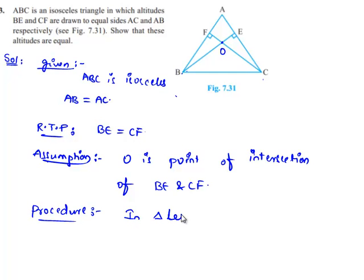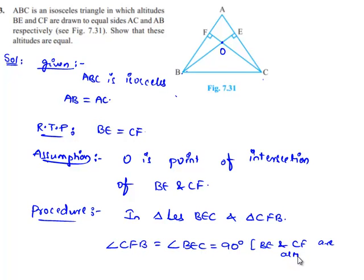In the procedure, let us consider in the first step triangles BEC and triangle CFB. In this, angle CFB is equal to angle BEC is equal to 90 degrees, as given that BE and CF are altitudes to AB and AC respectively.